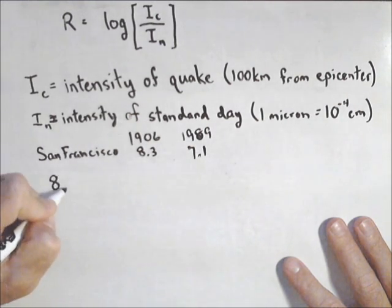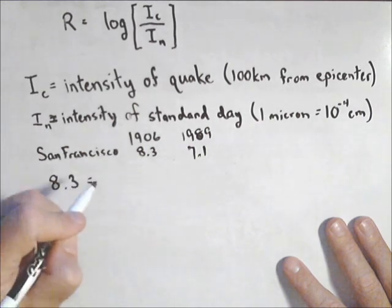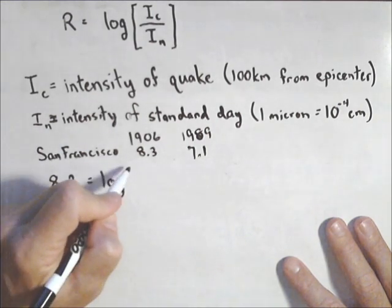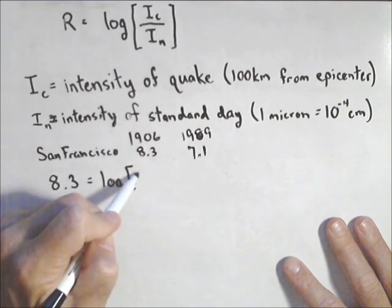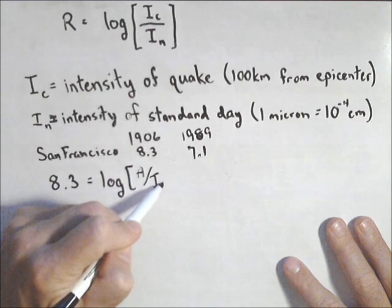So what we're going to do is we're going to set up an equation for each of these. So 8.3 equals log of, now let's give a name for the 1906 intensity. We'll call it A over I sub n.